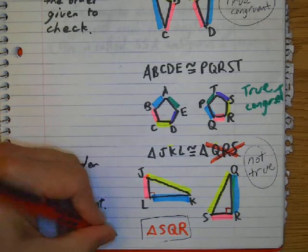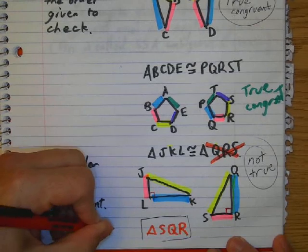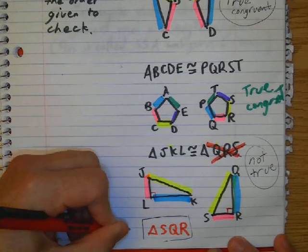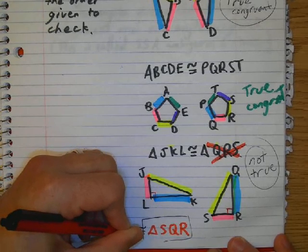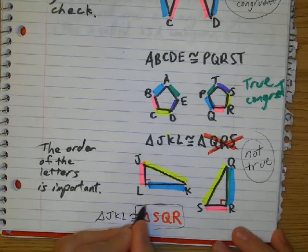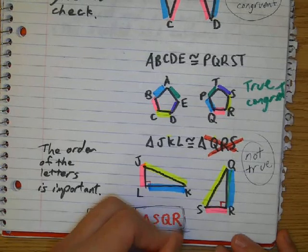So if this had been here, then it would be true. But the order of these letters makes it not true. So it would be true if I said triangle JKL is congruent to triangle SQR. This would be true.